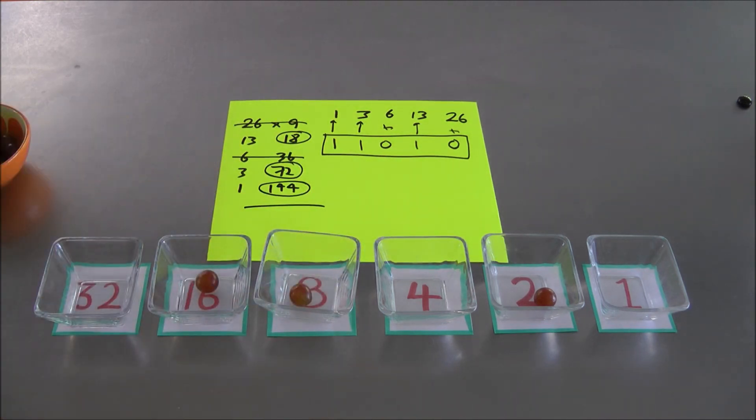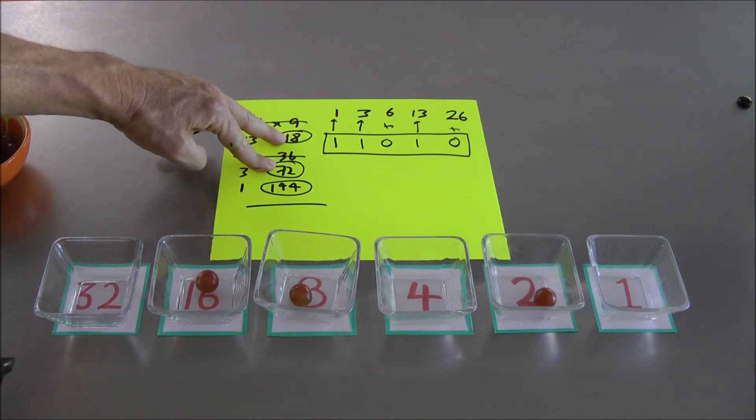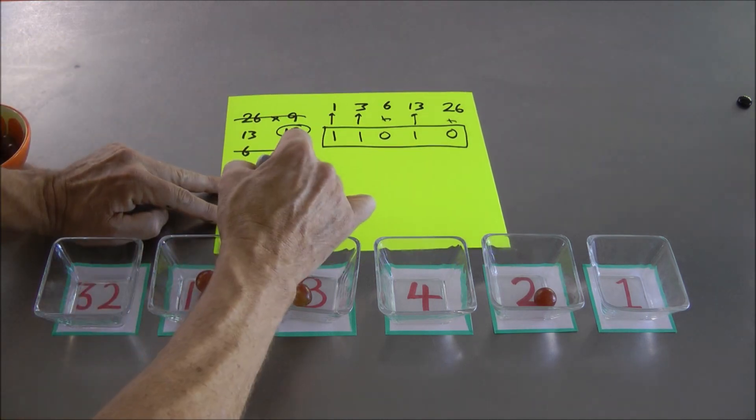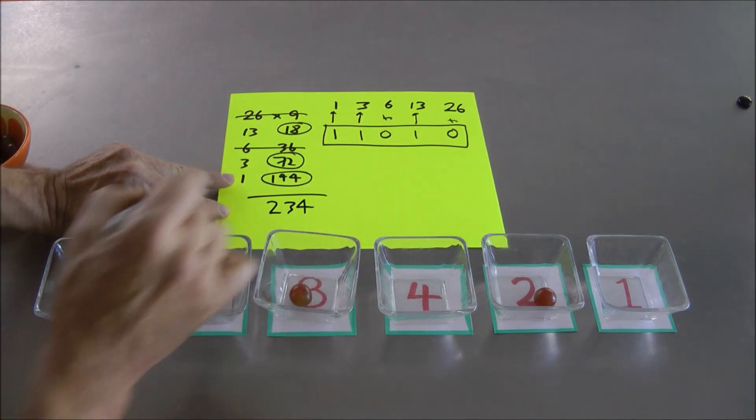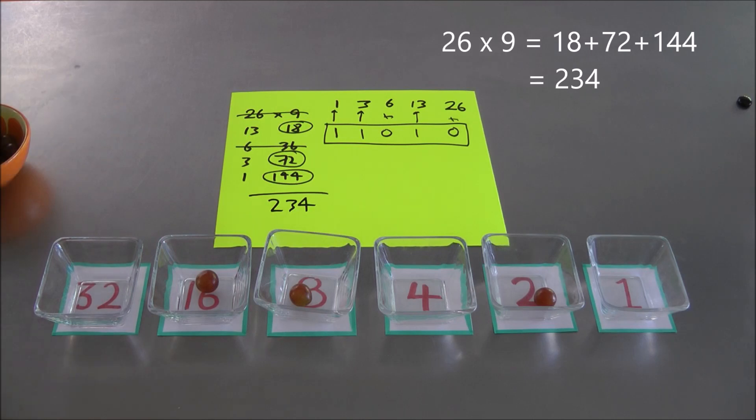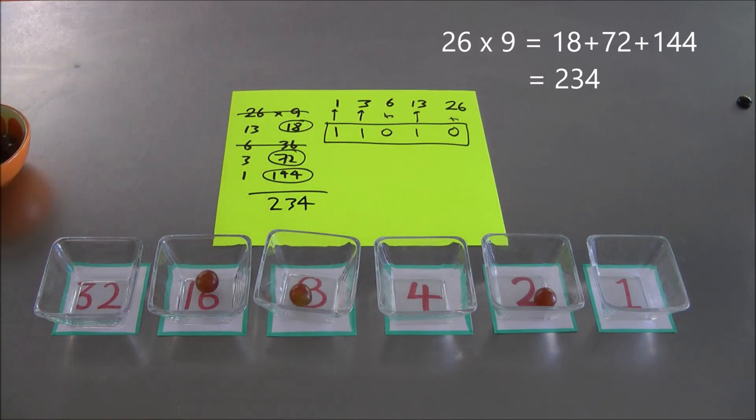Add those up. 18 and 72 is what? 80, 10. That's 90 plus 144 makes 234. I claim 234 is indeed the answer to 26 times 9.